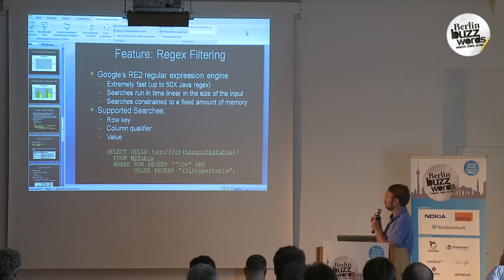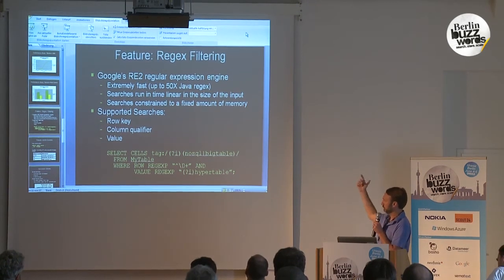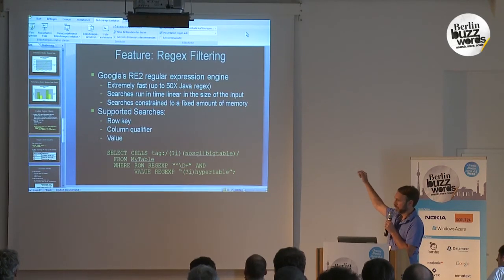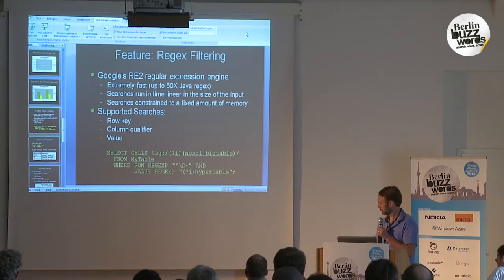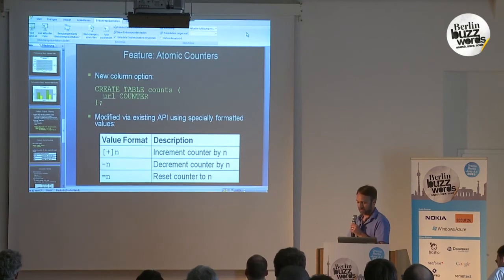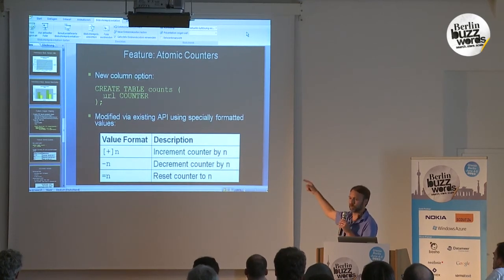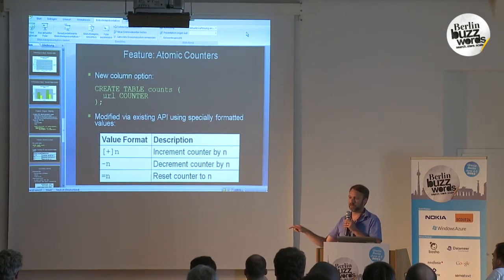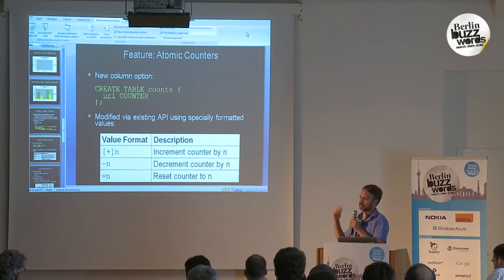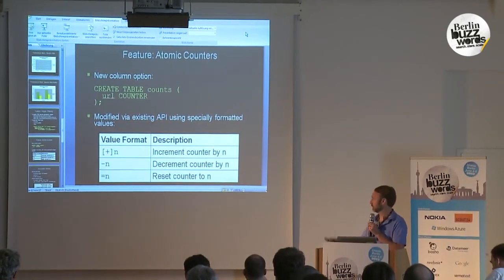Hypertable has regular expression filtering. We use Google's RE2 regular expression engine, which is very fast. You can do regex filters on the row key, the column qualifier, and the value. We also have atomic counters, and it's a very high-performance implementation. Whenever you increment a counter, it involves no random access — we accumulate all the increments and aggregate at read time or compaction time, so it's very fast.